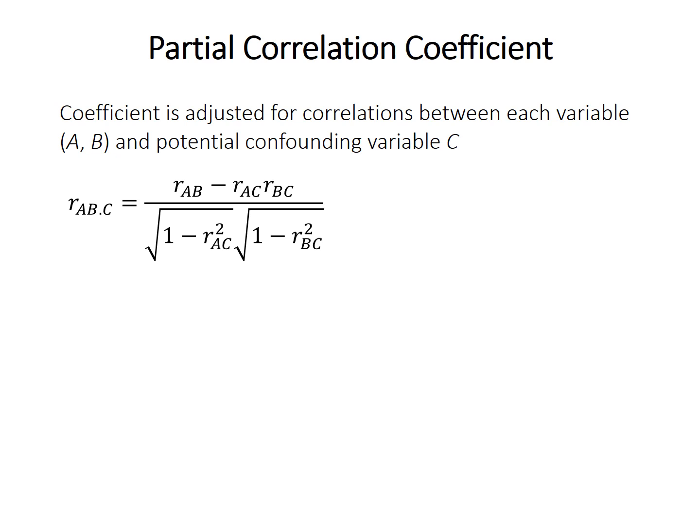I won't go into too much detail about the mathematics, but basically the partial correlation coefficient between our two variables is the simple correlation coefficient RAB — the correlation between A and B — adjusted to account for the correlations between each main variable and the confounding variable C: that is, RAC (correlation between A and C) and RBC (correlation between B and C). This is Pearson's partial correlation coefficient with a single confounding variable. For hypothesis testing, the coefficient can be converted into something that follows a t-distribution where the degrees of freedom are n (the number of total observations) minus 2, minus k (the number of confounding variables), so generally n minus 3 in this case.